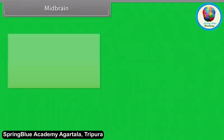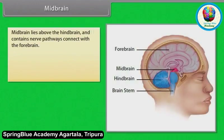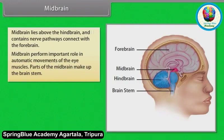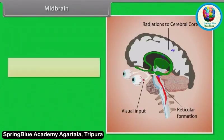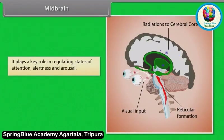The midbrain lies above the hindbrain and contains nerve pathways connected with the forebrain. It performs an important role in automatic movements of the eye muscles. Parts of the midbrain make up the brain stem. The reticular formation is a web-like network of neurons that rises from the hindbrain and passes through the midbrain to the thalamus in the forebrain, playing a key role in regulating states of attention, alertness, and arousal.